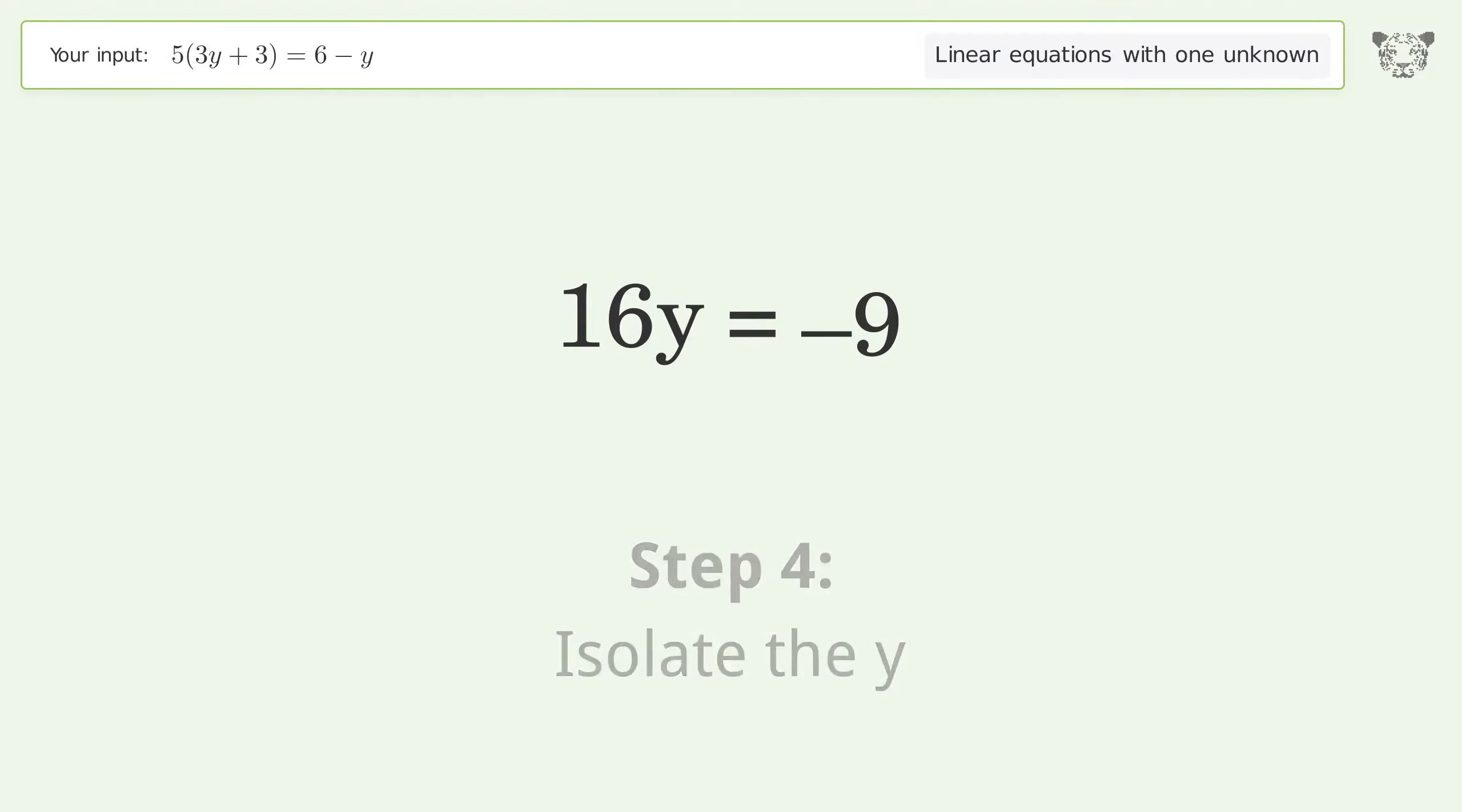Isolate the y. Divide both sides by 16 and simplify the fraction. And so the final result is y equals negative 9 over 16.